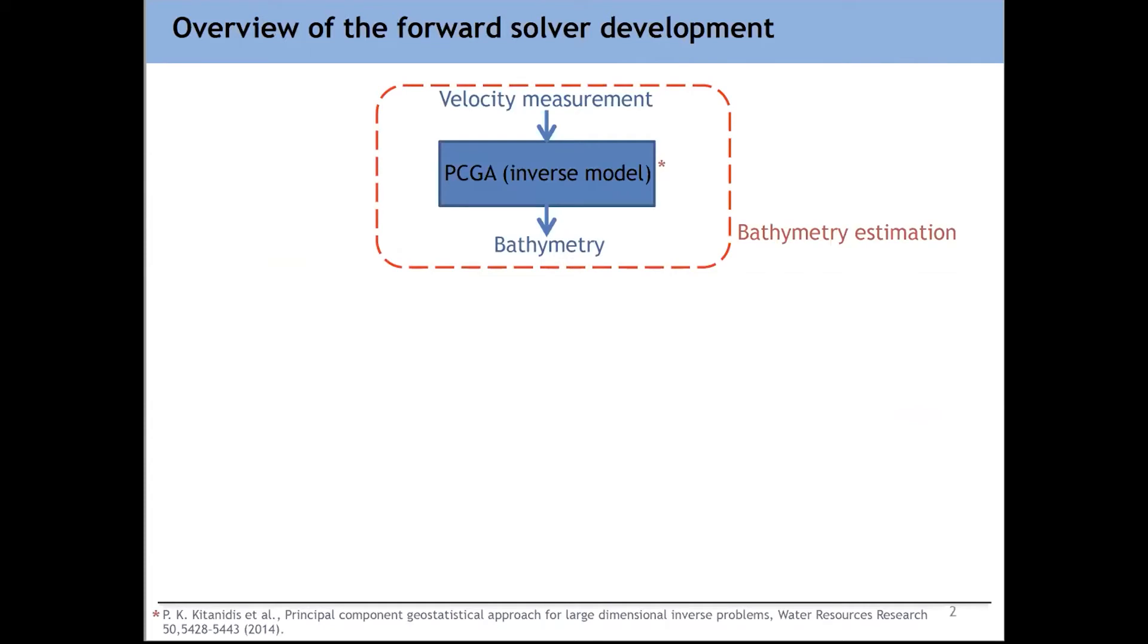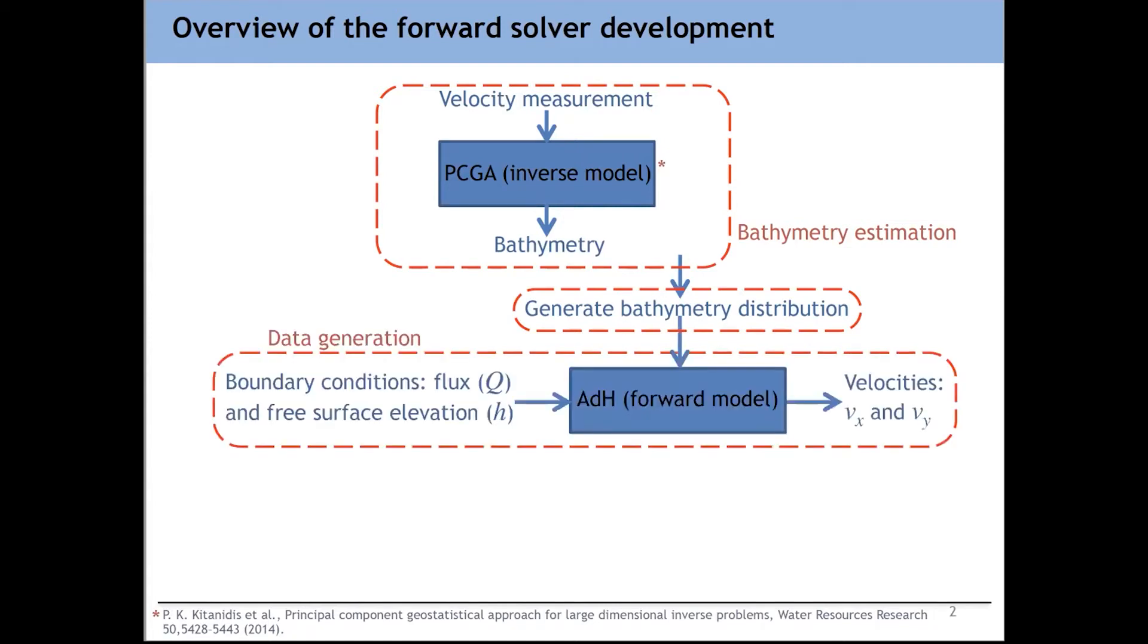So these are the general steps, the whole setup of the problem that we're trying to solve. First, we start from this algorithm, PCGA, standing for Principal Component Geostatistical Approach. The paper on the bottom probably would, if you're interested, you can look at that paper to get some idea of how the algorithm works. But the way it works is that briefly, starting from some velocity measurement, it estimates bathymetry profile. We don't really need to do the bathymetry measurement, which was one issue that I mentioned in the previous slide. And then once we have some estimation of the bathymetry using this PCGA approach, we generate bathymetry distribution. We try to augment whatever bathymetry that the PCGA gave us, and I'm going to talk about it later why we do this stage.